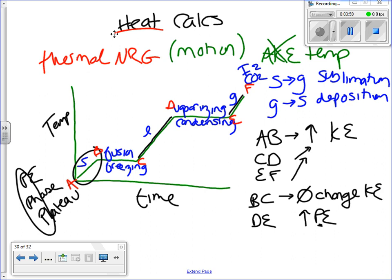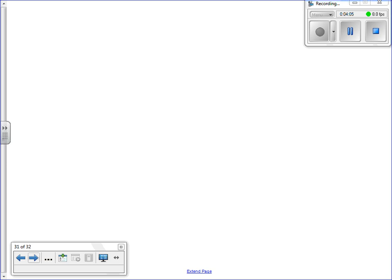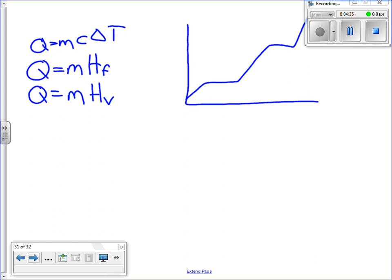Let's talk about some of these calculations. You have three formulas in your reference table. You have Q equals mc delta T, and then you have Q equals mHf and Q equals mHv. The hardest part of these types of equations is knowing which one to use when. You need to figure that out. You need to figure out what phase of matter you're dealing with.